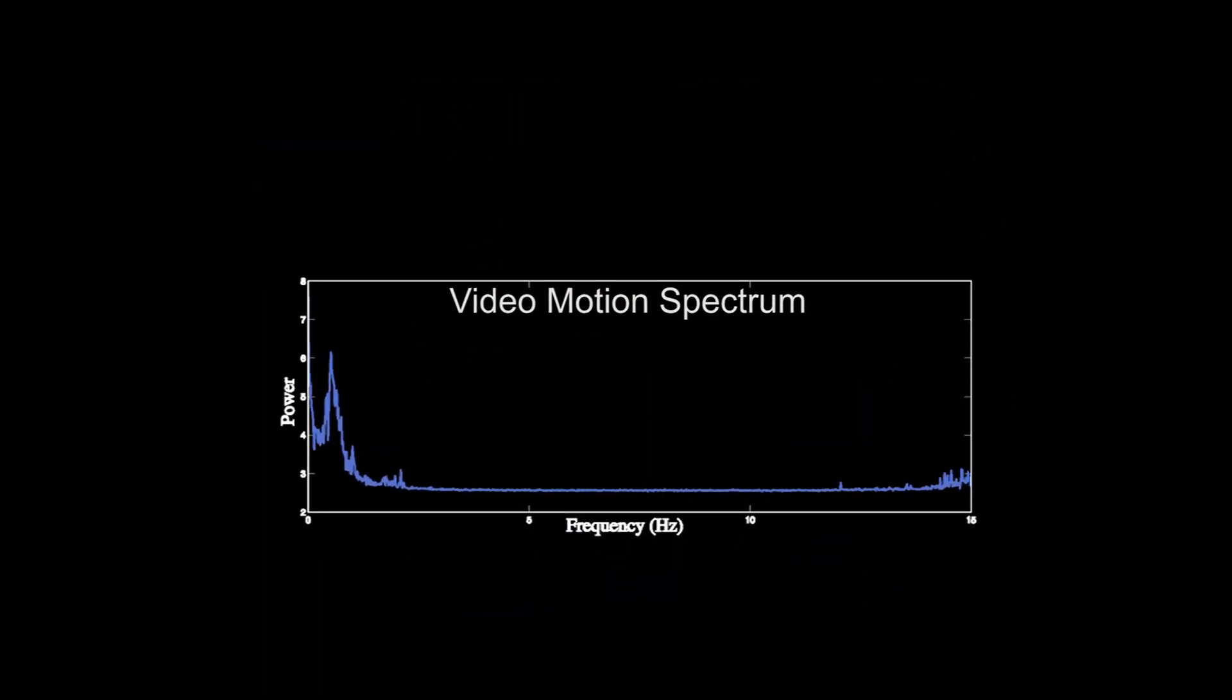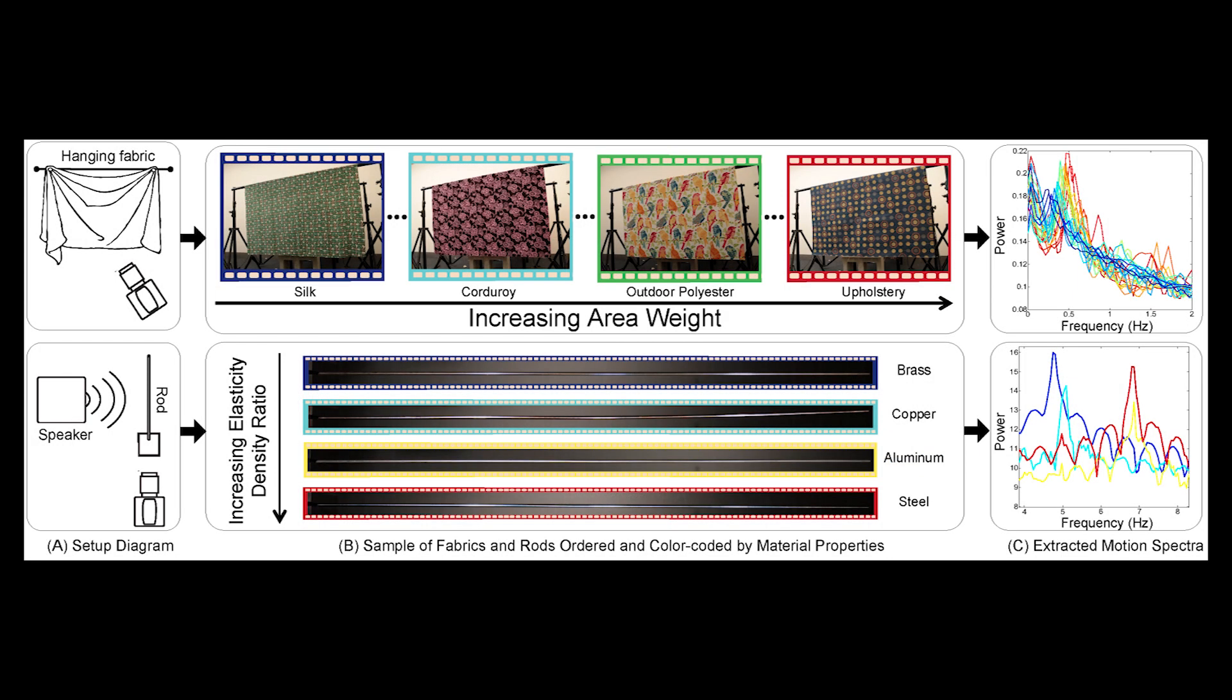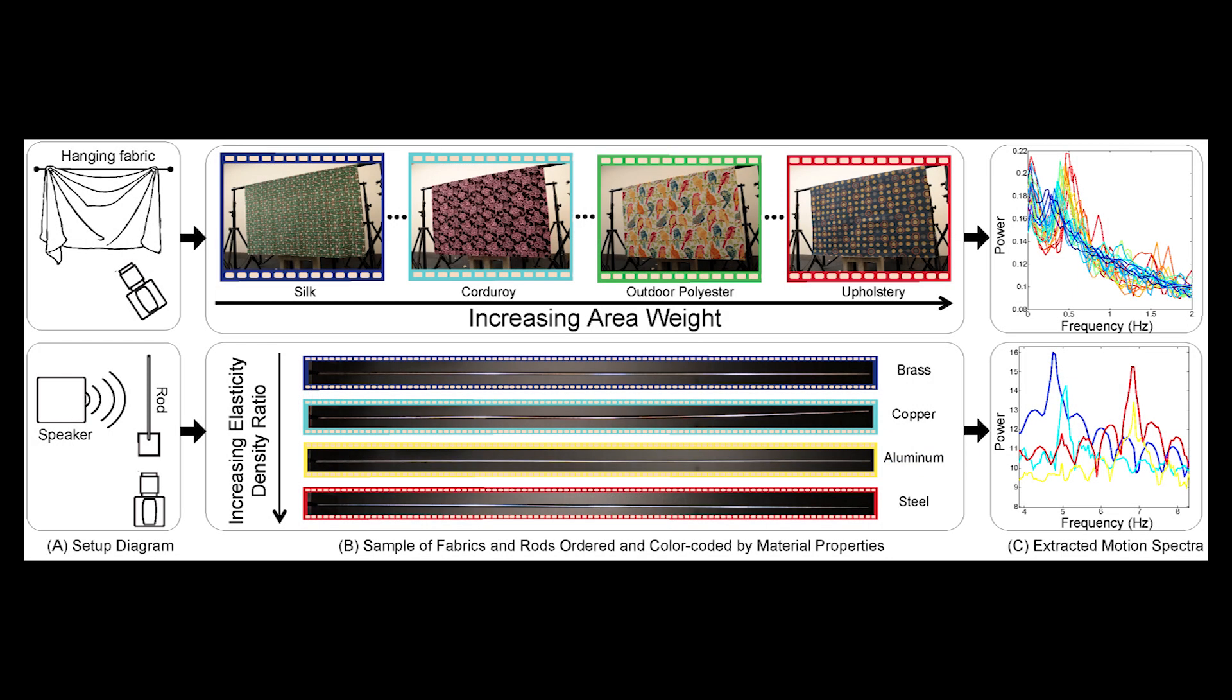By relating these motion spectra to the resonant frequencies of objects with known or fixed geometry, we are able to infer material properties, like density and stiffness, from video.